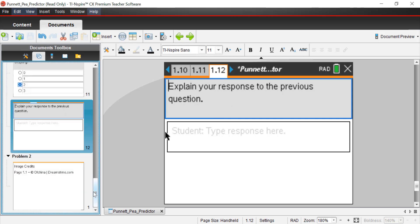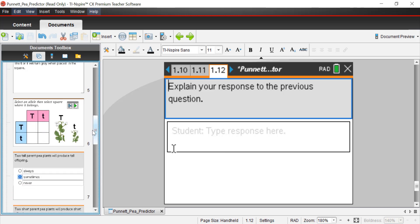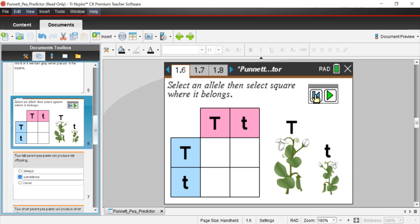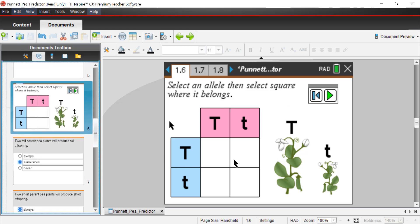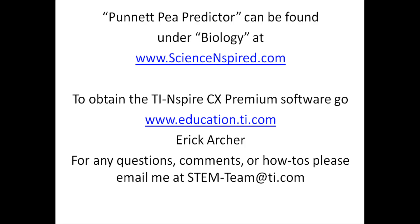That's the end of this particular lesson. I hope you understand how these things work now. Please go to our website — we have trial versions of the software you can download and use for free. Then download this activity off of scienceinspired.com and play with it on your own to check out all the different combinations. Also check out your family, siblings, and friends and compare their physical traits. Genetics is something really interesting — you can see it all around you. Please check out other videos on our YouTube channel and come back to see what's new. Thanks a lot, bye-bye.